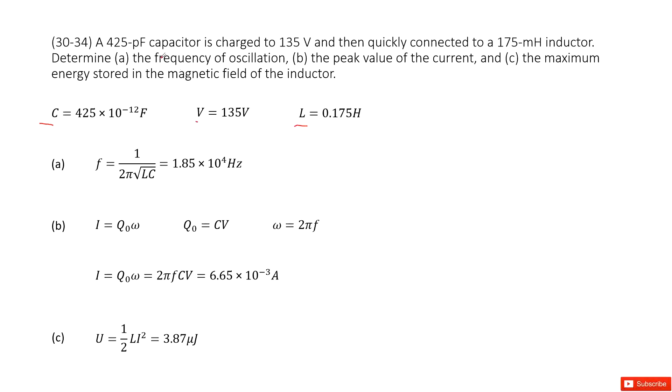First part, we need to find the frequency of oscillation. This is very easy, very straightforward. We just write down the frequency we can learn in the textbook for the LC circuit: 1 over 2π√LC. You just input L and C inside, you get the answer.